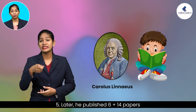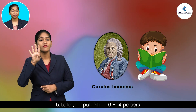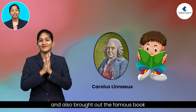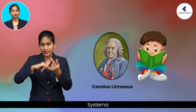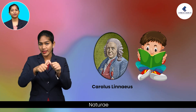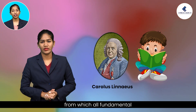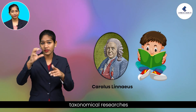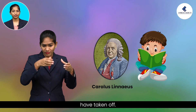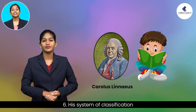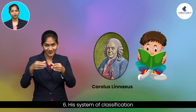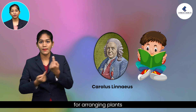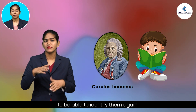Later, he published 6 plus 14 papers, and also brought out the famous book Systema Naturae, from which all fundamental taxonomical researchers have taken off. His system of classification was a simple scheme for arranging plants to be able to identify them again.